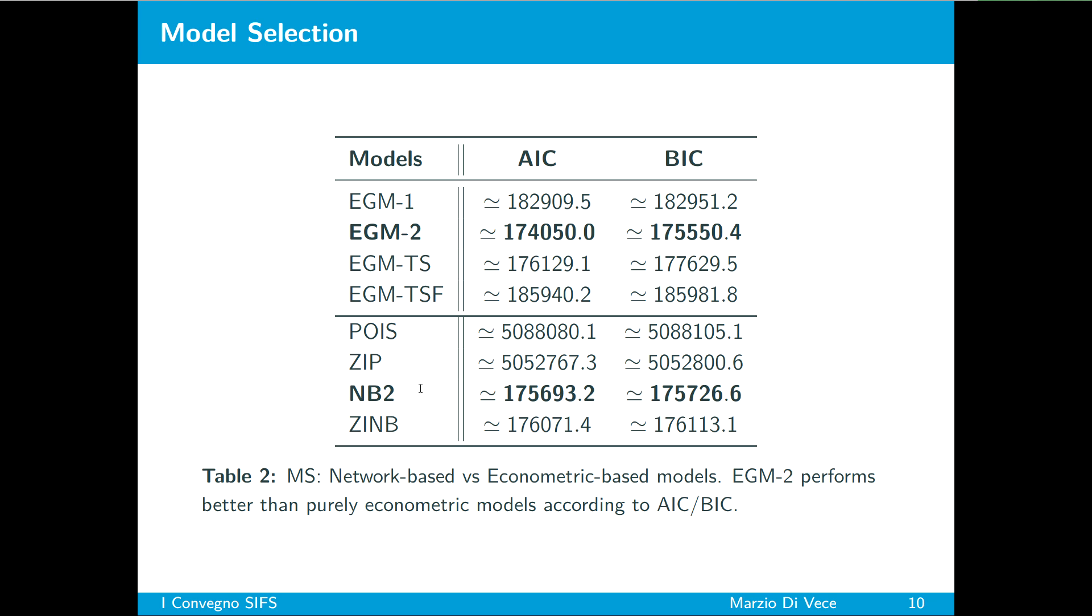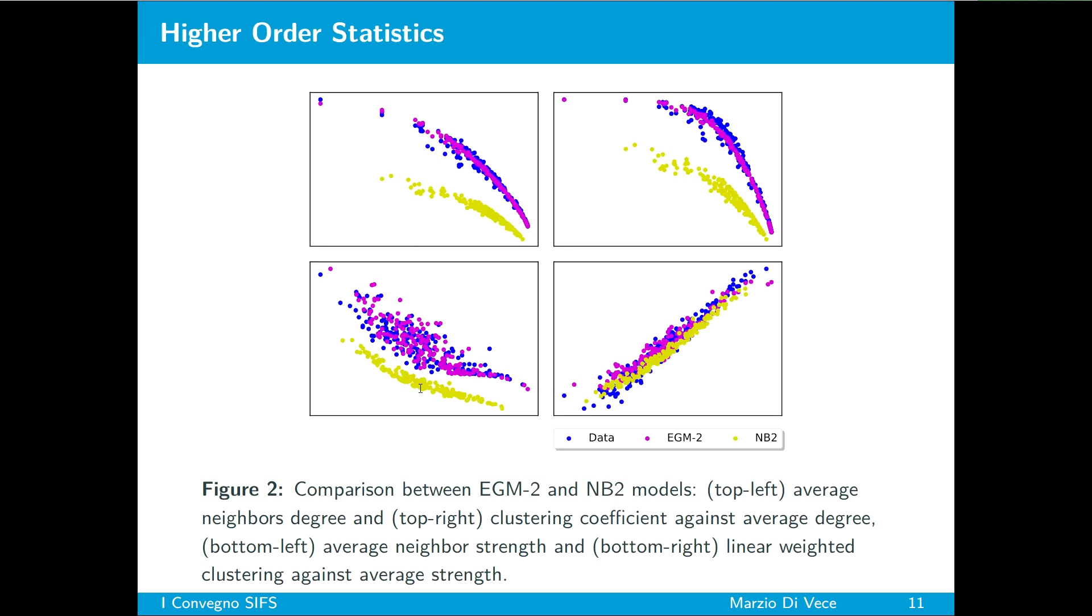The data that we used is by Gleditsch for year 2000 and includes yearly trade volumes, GDP values and geographical distances. After pre-processing and symmetrization we have a network of 176 countries with a density of 63 percent and a total weight of about 6 trillion dollars. Seeing different statistics such as true positive rate, specificity, precision and accuracy.